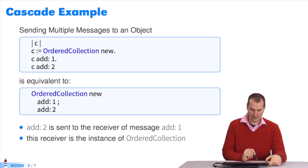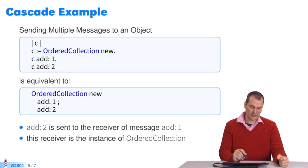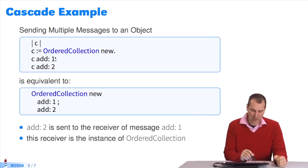Another example. Imagine you want to create a collection. I have a collection, so I define a variable C. I write the collection in C. See the period here? I add one and two to the collection. These two expressions are exactly the same. It means I write ordered collection new.